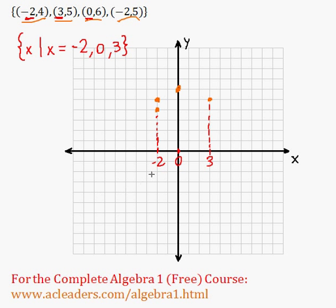Now let's do the range. The range is basically the same thing but for y. And what are the y values that exist here? We have 4, we have 5, and we have 6. And that's it.